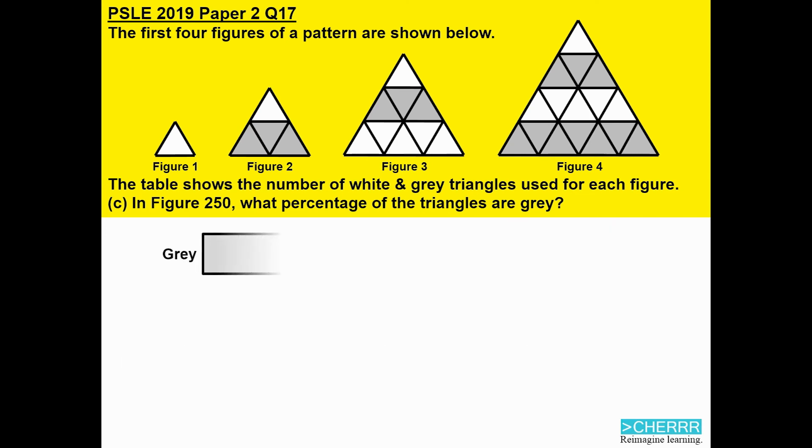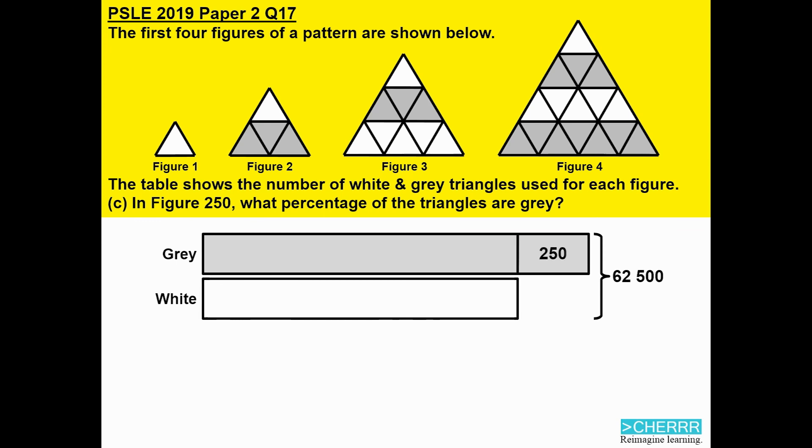We will now take a look at a simple model. Starting with the grey, which is supposed to be longer than white. And the difference will be 250. We take 62,500 minus 250. That will get us 62,250. Take this number and divide by 2. That will get us 31,125. However, we need grey. So we must add back another 250. We will get 31,375 grey.